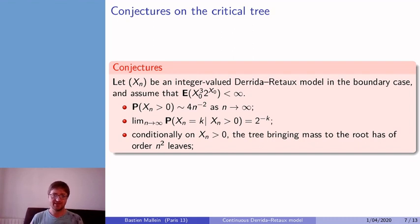Some conjectures exist on the Derrida-Retaux model on the boundary case, so when it is critical. Under some integrability assumptions, the expectation of X₀³·2^(X₀) is finite, we believe that the probability that Xₙ is positive, so the probability that some car leaves the parking space, decays as 4 over n² as n goes to infinity.